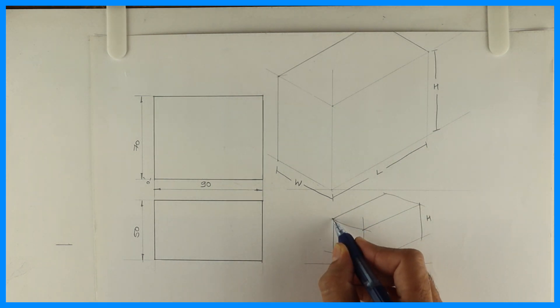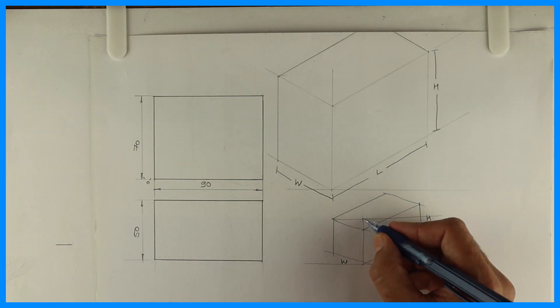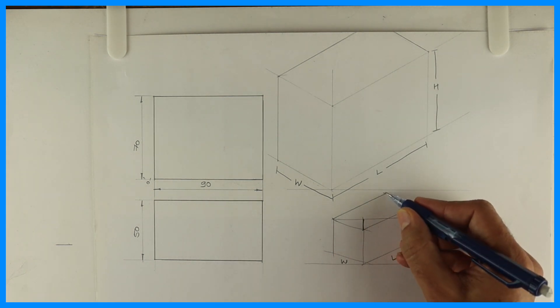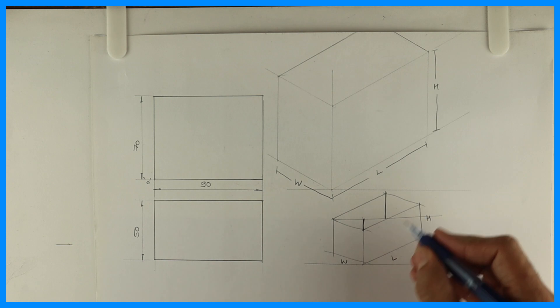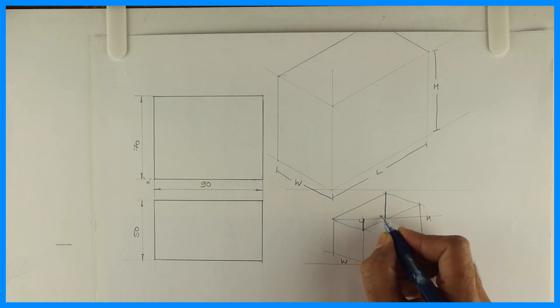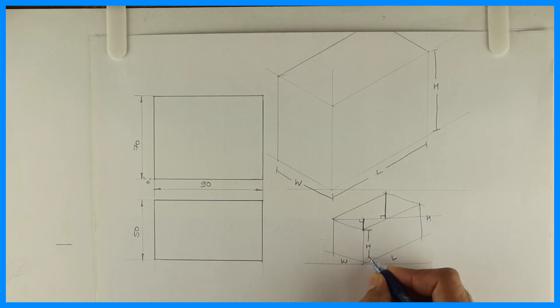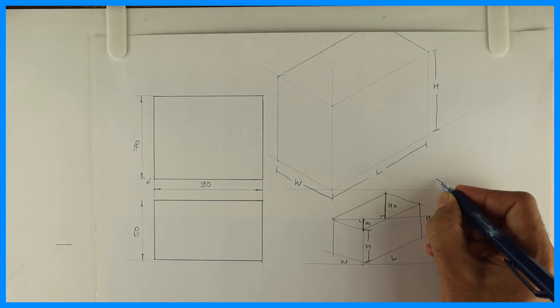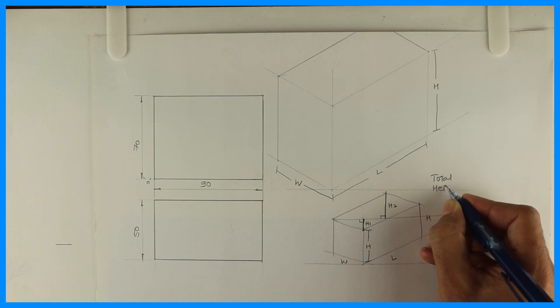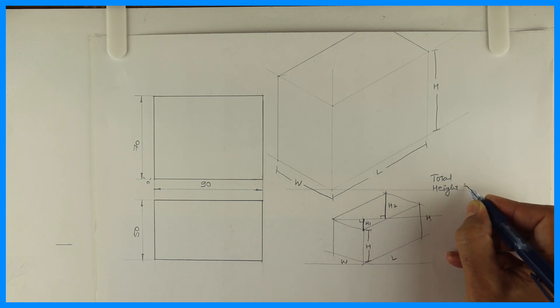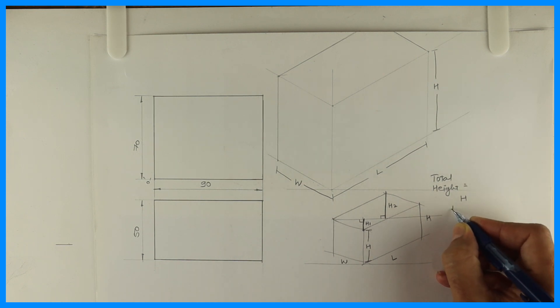I will draw one horizontal line from here. This is 90 degrees. See, this is H. This is H1 and this is H2. So if you see total height, it's H plus H1 plus H2.